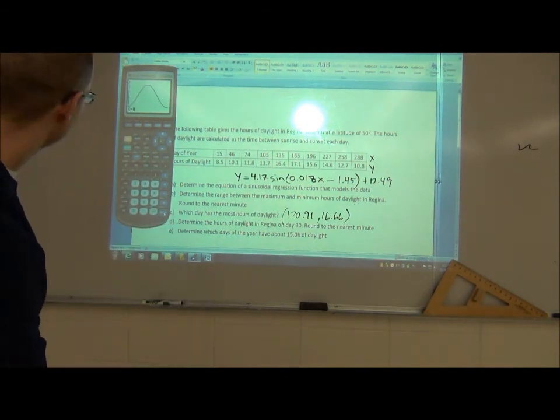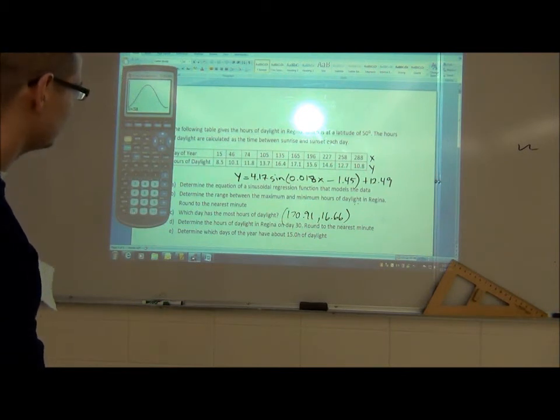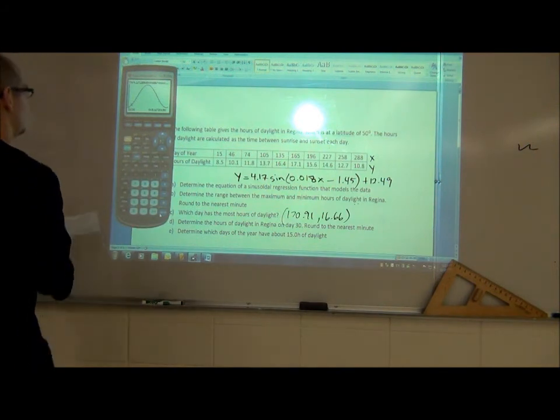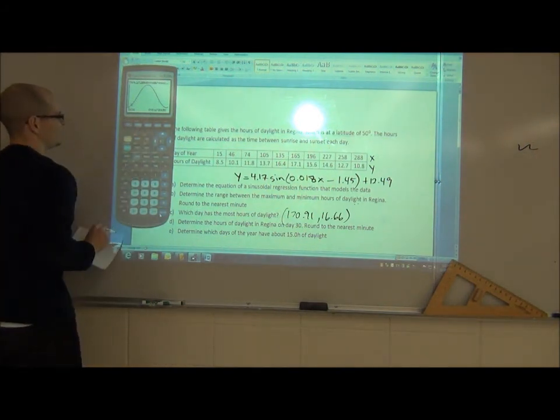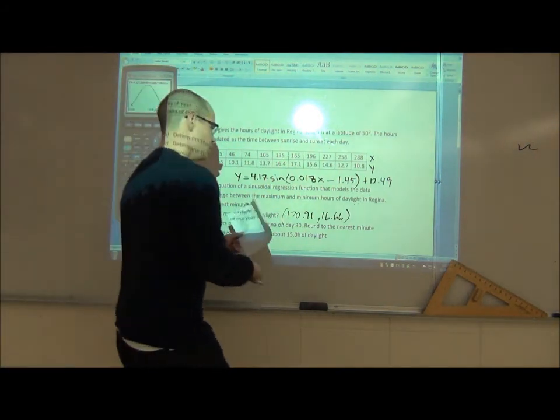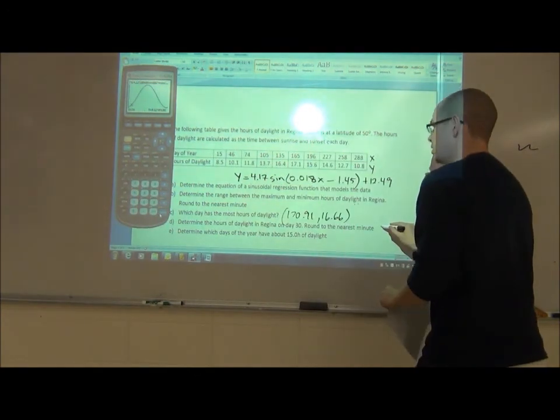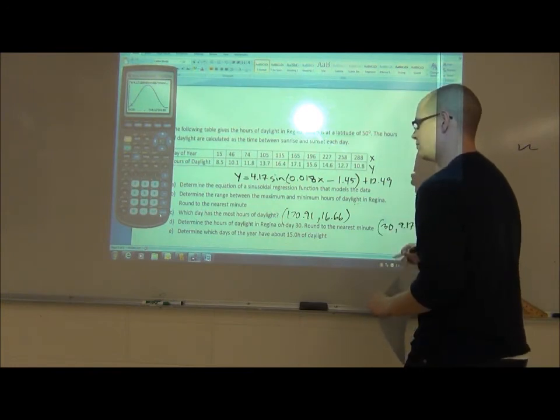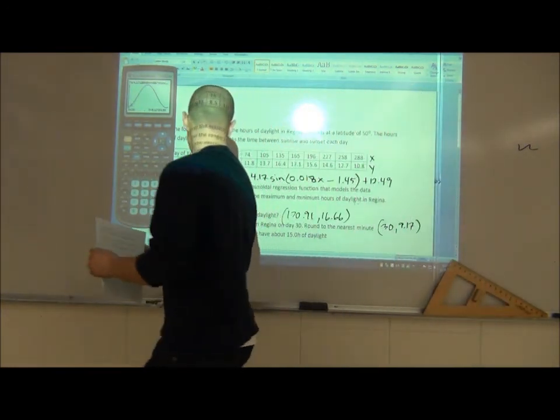And it's going to give us the y value, which would be the hours of sunlight. So put in x equals 30, hit enter, and it tells me that on day 30 there are 9.17 hours of sunlight. So for D, on day 30, which would be my x value, there are 9.17 hours of sunlight.